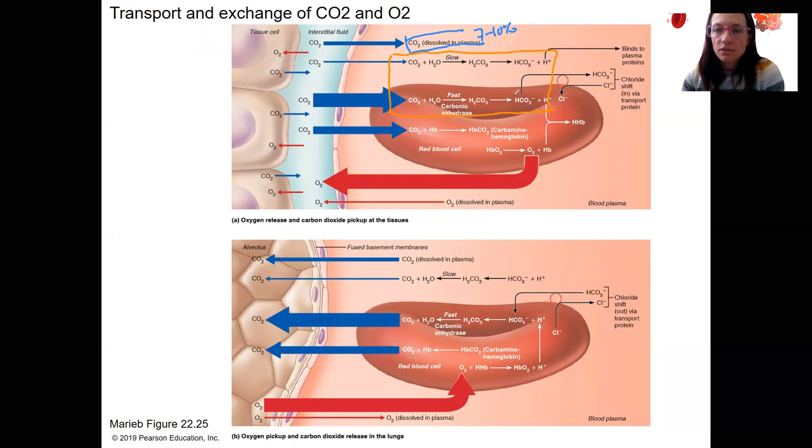carbonic anhydrase is producing bicarbonate and hydrogen ions. This is, in this form, about 70% of carbon dioxide carried. Then, number three, we've got carbon dioxide binding to hemoglobin.